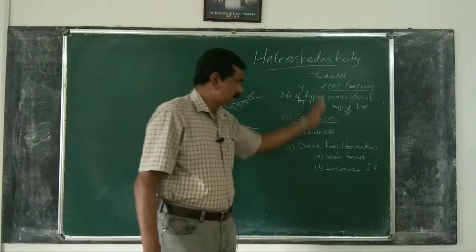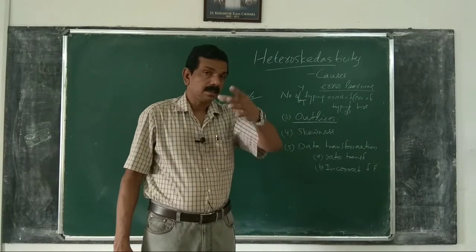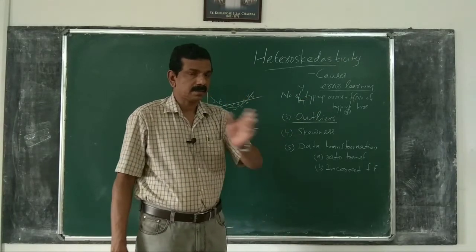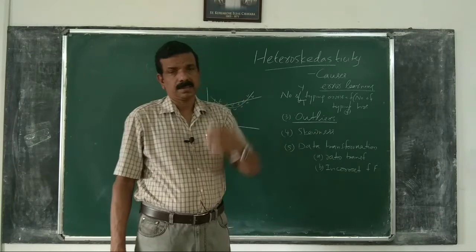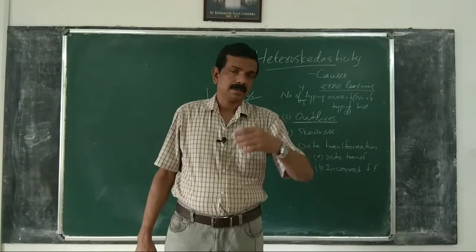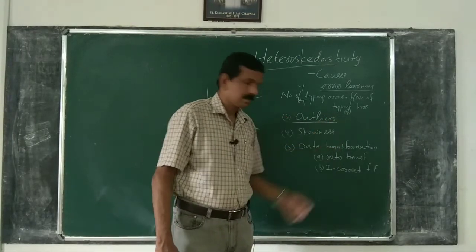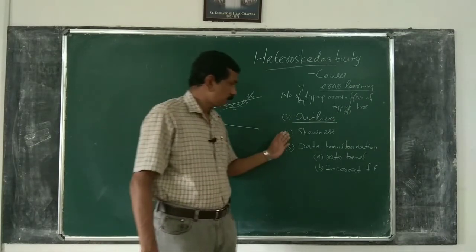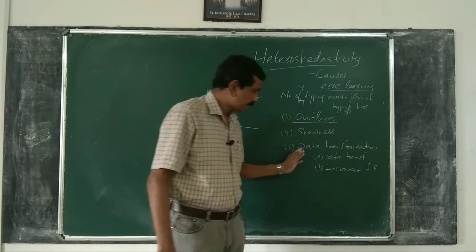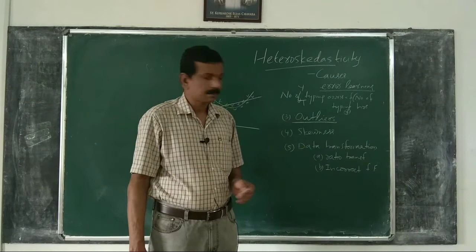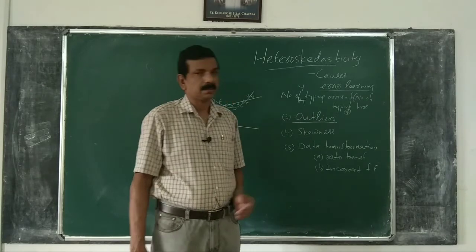These are some of the reasons for heteroscedasticity. One is that in error learning models, heteroscedasticity is suspected. In the study of the saving-income relation, as income increases, people have more discretionary income, which causes heteroscedasticity. Outliers are a source of heteroscedasticity. Skewness in the distribution of one or more variables is a source of heteroscedasticity. Data transformation, like ratio transformation, and incorrect functional form are also reasons for heteroscedasticity.